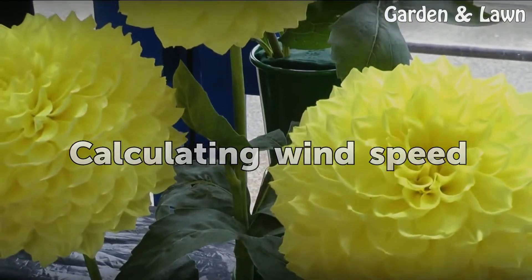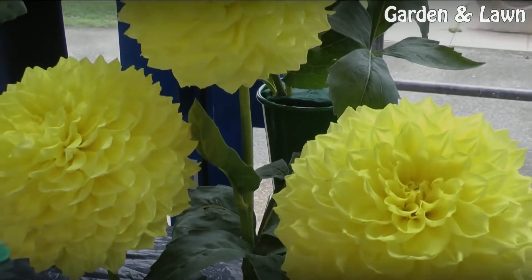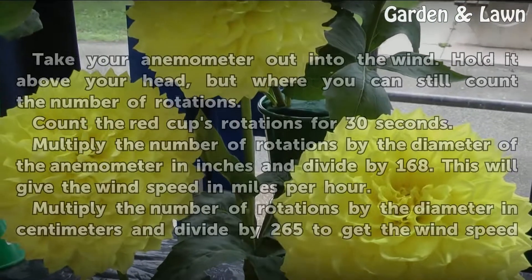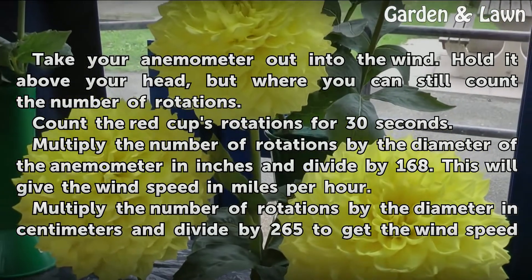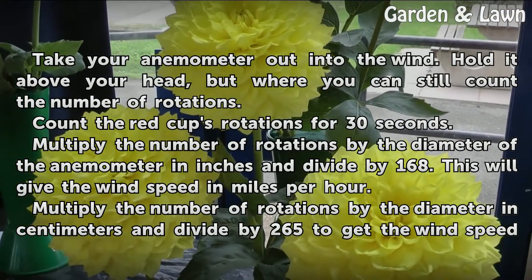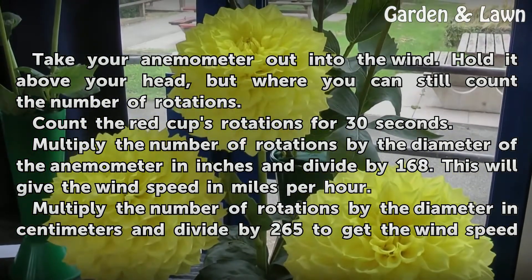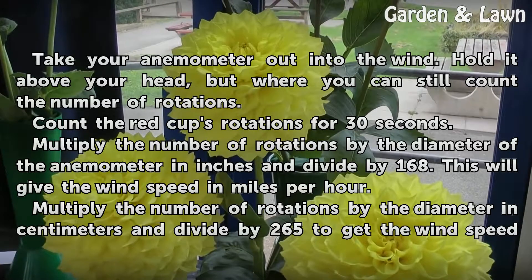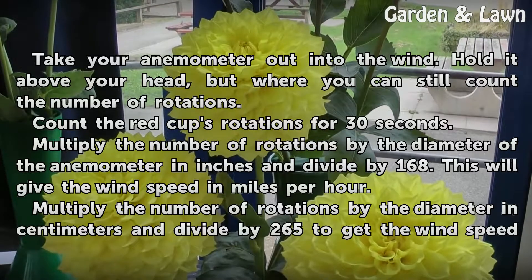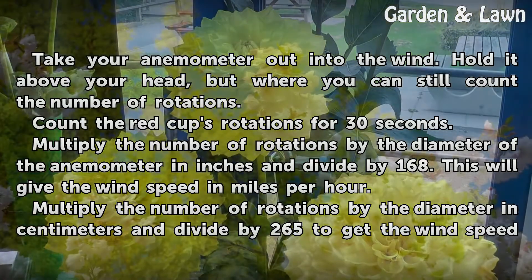Calculating wind speed. Take your anemometer out into the wind. Hold it above your head, but where you can still count the number of rotations. Count the red cup's rotations for 30 seconds.